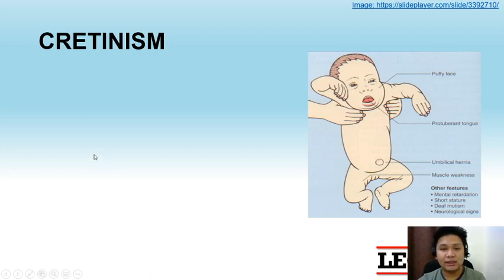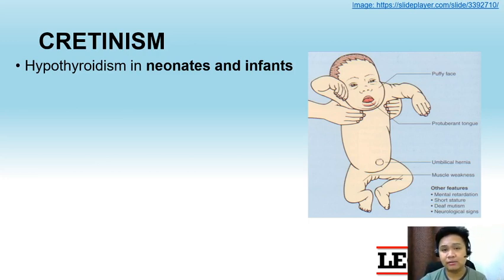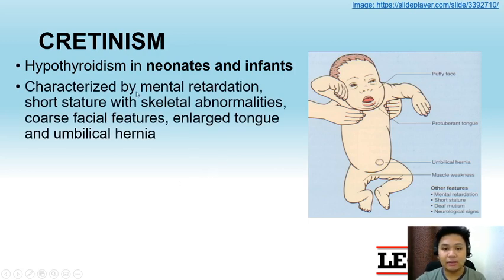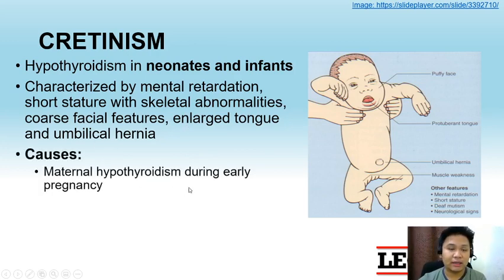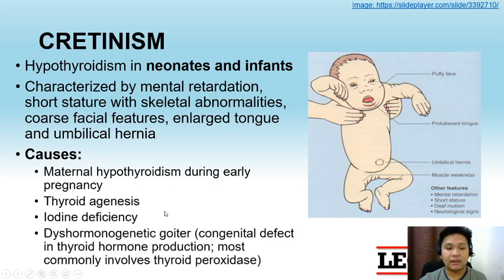Lastly is Cretinism, which is hypothyroidism in neonates and infants. Thyroid hormones play an important role in the mental and physical development of neonates and infants, so with a deficiency of thyroid hormone, we see various manifestations: mental retardation, short stature with skeletal abnormalities, coarse facial features, and large tongue with umbilical hernia. Causes include maternal hypothyroidism during early pregnancy — which is why iodine supplementation during pregnancy is important — thyroid agenesis, iodine deficiency, and dyshormonogenetic goiter or congenital defect in thyroid hormone production.